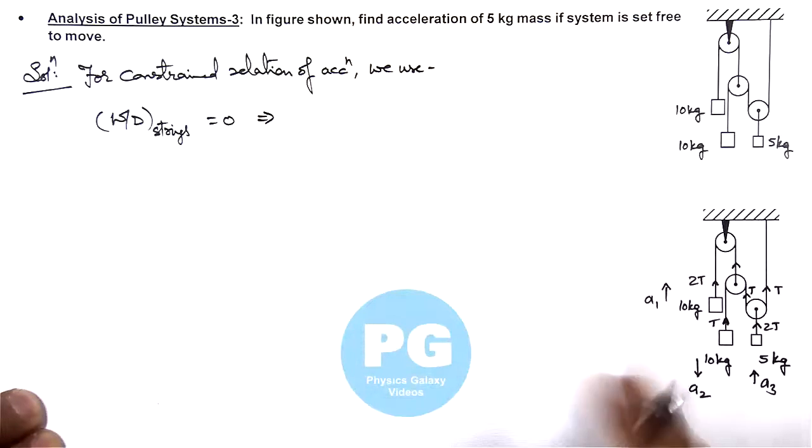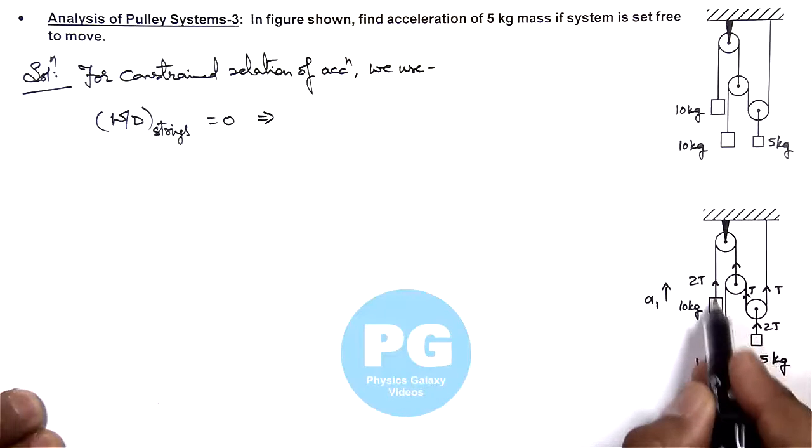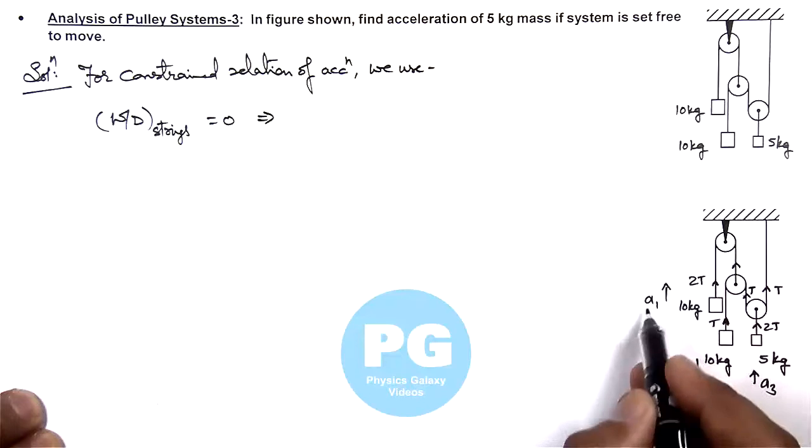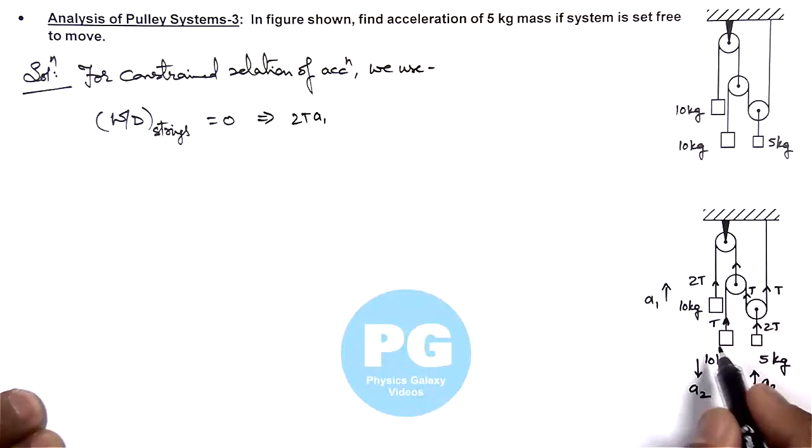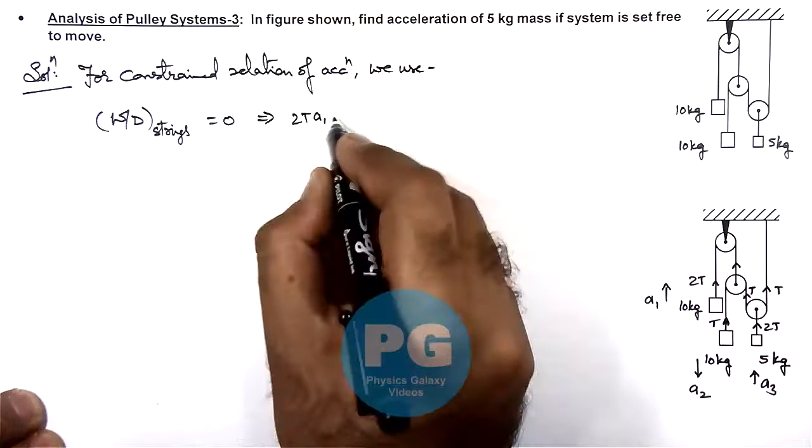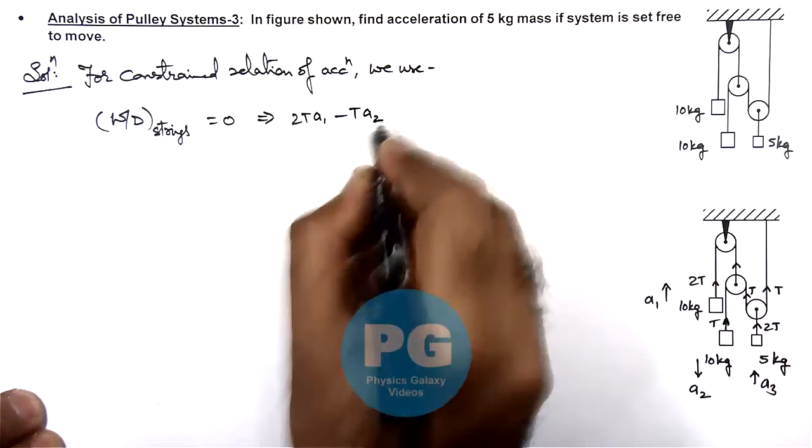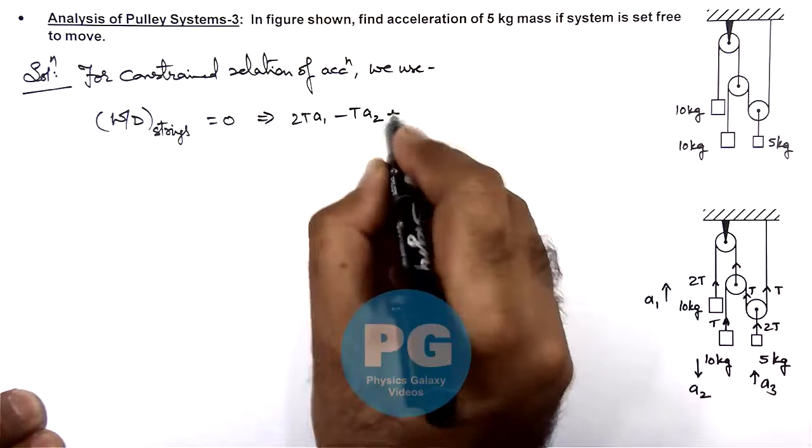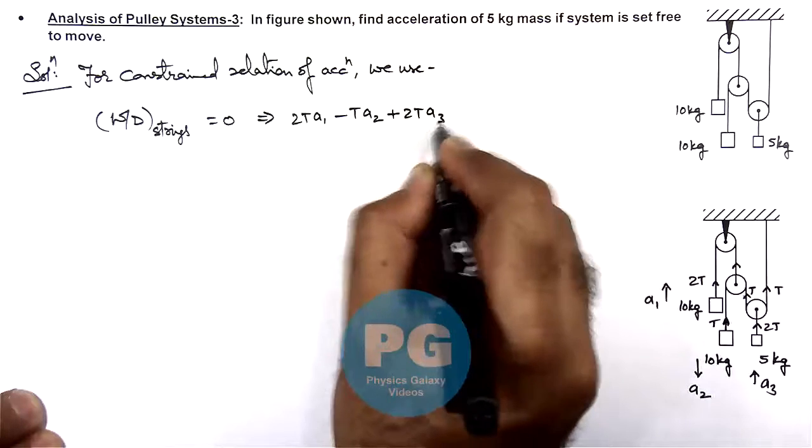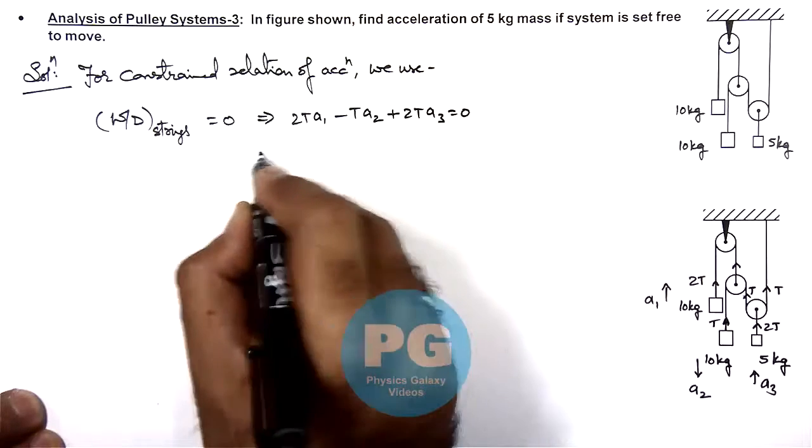Which is resulting in this situation: for this 10 kg, 2t is acting in upward direction and its displacement will be proportional to a1, so this is 2t a1. For this 10 kg, t is upward and a2 is in downward direction so it is minus t a2. For this 5 kg we have assumed it is going up so it will be plus 2t a3 and that should be zero.